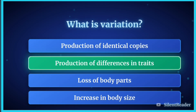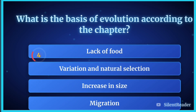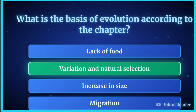The correct answer is production of differences in traits. What is the basis of evolution according to the chapter? The correct answer is variation and natural selection.